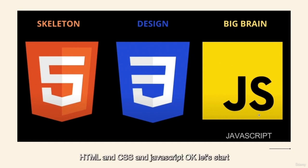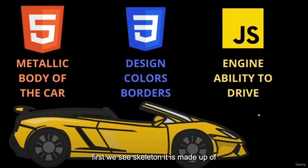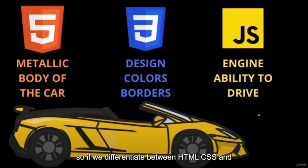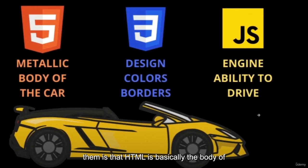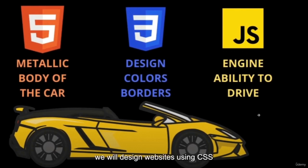Let's start. When we look at a car, we see a skeleton, colors, and functionality — the engine. If we differentiate between HTML, CSS, and JavaScript: HTML is basically the body of the car, which means it is the skeleton. The design and coloring of the car is basically CSS.